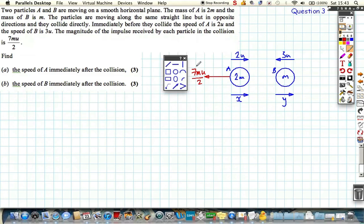That's the magnitude of the impulse, but it has to be to the left because something's happening to A. In order for B to be changing direction, the magnitude of the impulse is exactly the same, 7mu over 2, however it's now acting to the right. We're always going to assume for this question that to the right is positive.